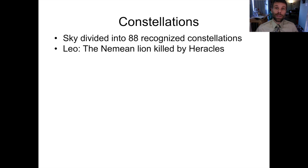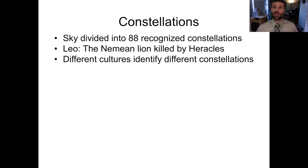One particularly famous one is the constellation Leo, which is generally described as being a depiction of the Nemean lion killed by Hercules, or Heracles if you prefer the Latinized pronunciation. But different cultures have identified different constellations.